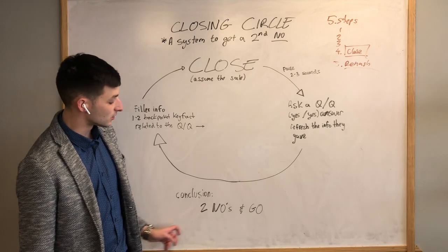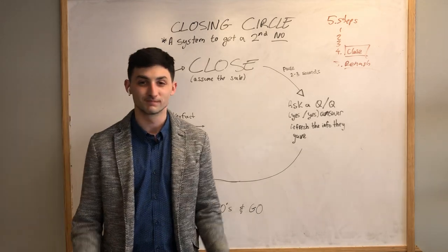Regardless, that's the closing circle. Conclusion is two nos, then go.